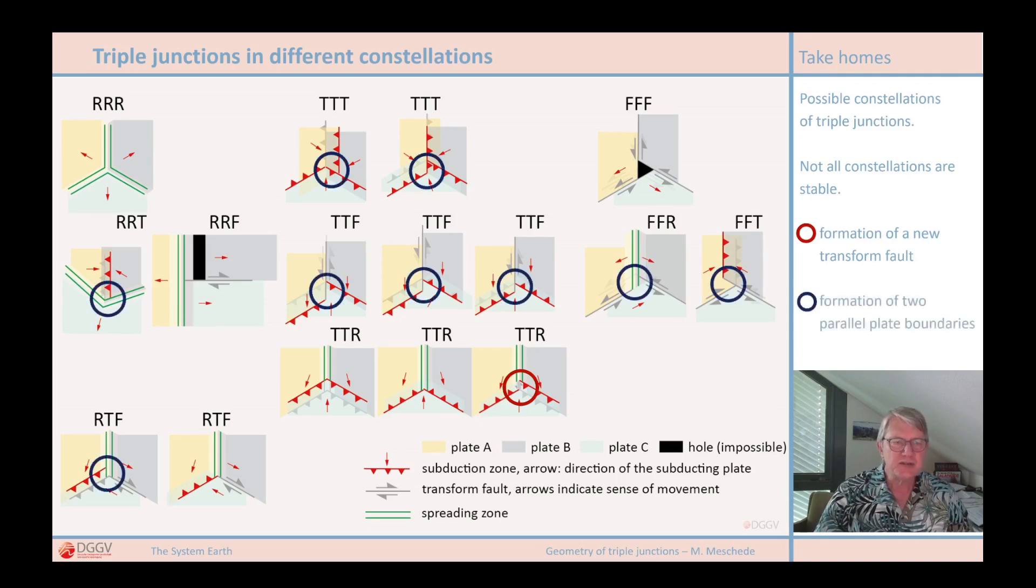Such changes also take place in other constellations that are initially possible, but ultimately unstable. These changes in the constellation are primarily about the angle at which the plate boundaries meet. With this transformation, a stable triple junction can be formed from an unstable situation.